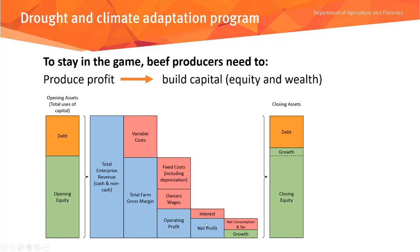Sometimes we have to adjust net profit to work out its impact on your closing equity. Net profit is basically what you've made out of the business to keep for yourself, but sometimes you adjust for tax paid or net consumption by operators above and beyond the owner's wages allowance. We call the result the growth in total assets — what we've contributed to closing assets through profit generated from this production system.